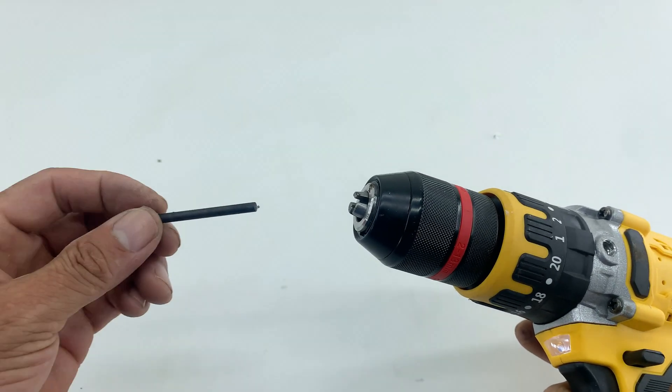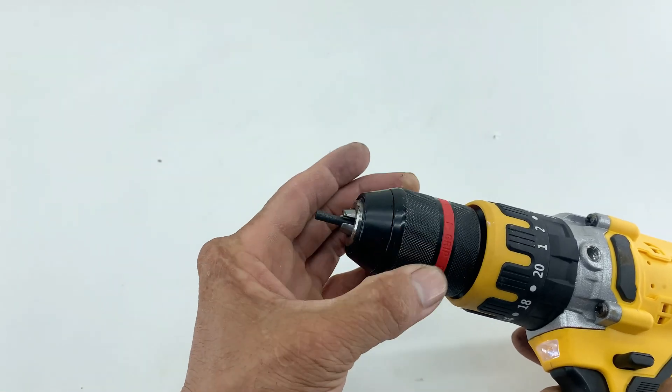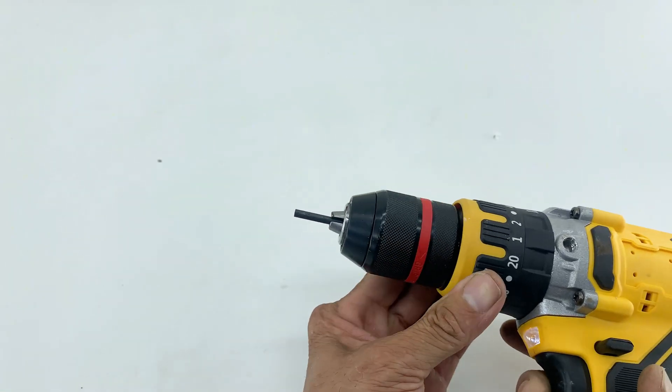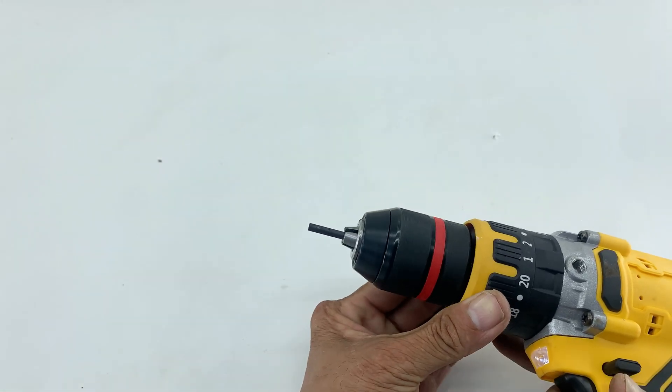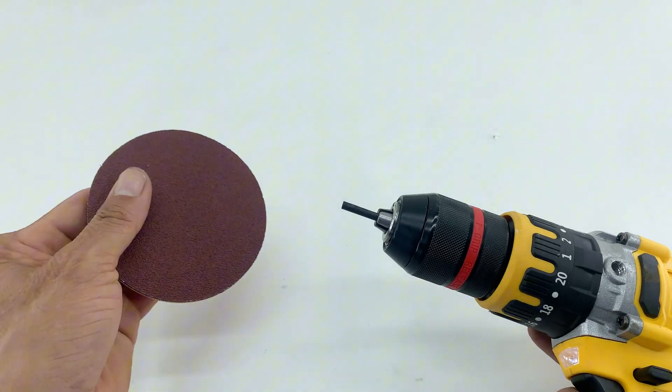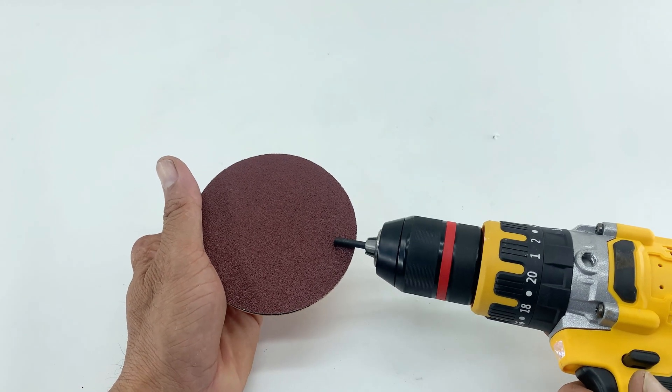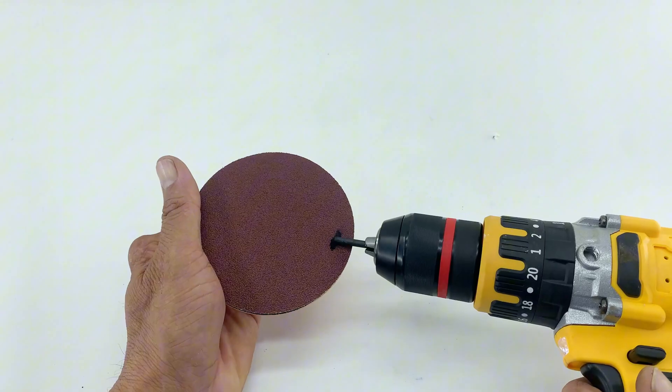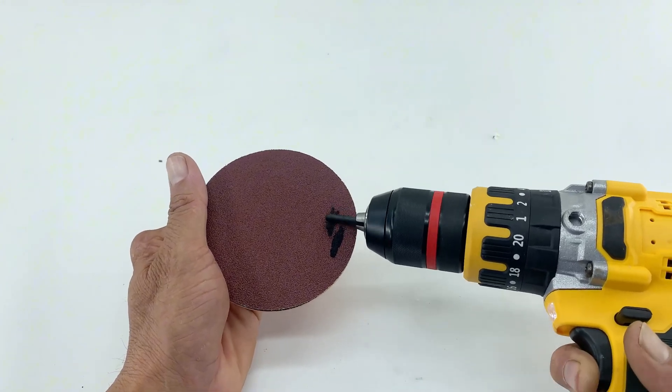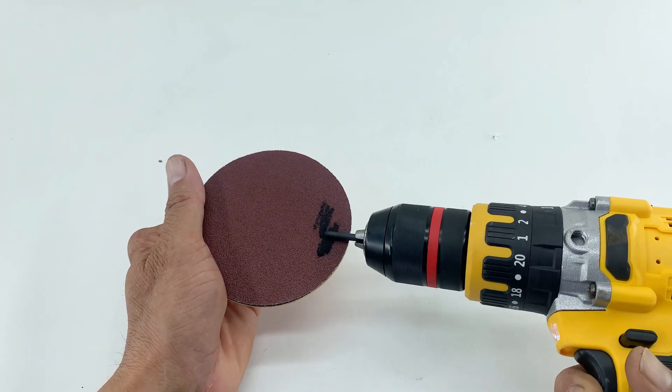To make our carbon rod tip precise and effective, I'm securing it into a drill chuck. Then, using sandpaper pressed against the spinning tip, I'm refining it. This sharp point will help concentrate the heat, making our soldering more precise.